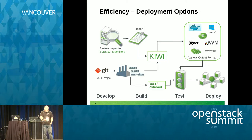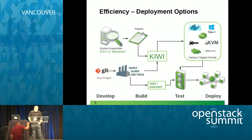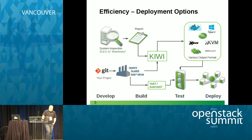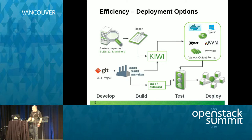You may have content distribution systems, content management environments, Git repos where code is being compiled, and different software update repositories related to the operating system. When we assemble these images, it's really combining the operating system, the applications, and the configuration to create an appliance image that can be output in a number of different formats — including all virtual machine platforms, physical disk images, custom installation media, or even Docker containers. It's quite extensible.